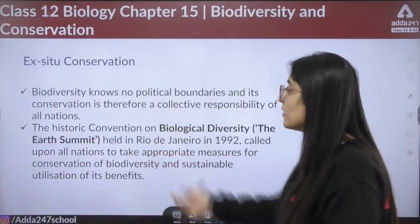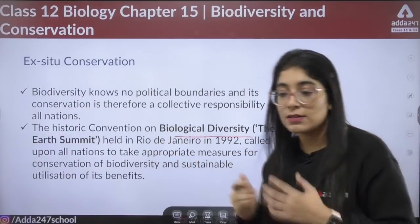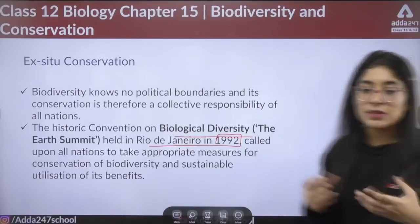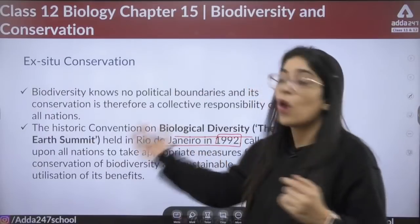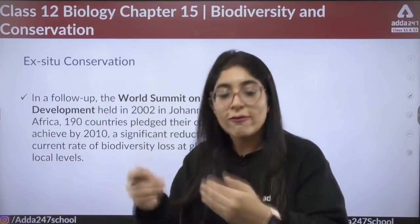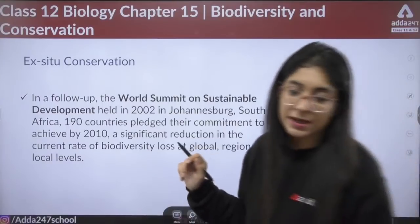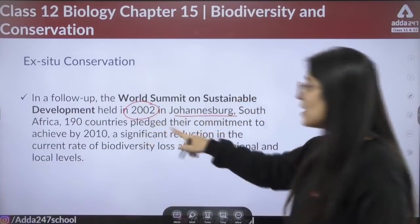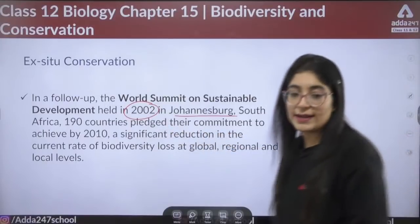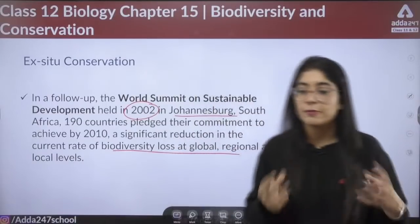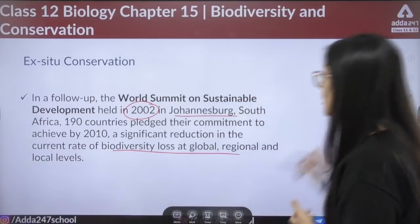Biodiversity knows no political boundaries. There was a historical Convention on Biological Diversity — the Earth Summit — held in Rio de Janeiro in 1992, which called on all nations to take appropriate measures for conservation of biodiversity and sustainable utilization of resources for future generations. A follow-up World Summit on Sustainable Development was held in Johannesburg in 2002, where 190 countries pledged to achieve a significant reduction in the current rate of biodiversity loss by 2010 at global, regional, and local levels.